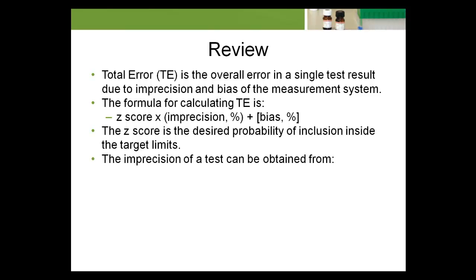The z-score is the desired probability of inclusion inside the target limits. The imprecision of a test can be obtained from calculation, CV percent equals SD divided by mean times 100.